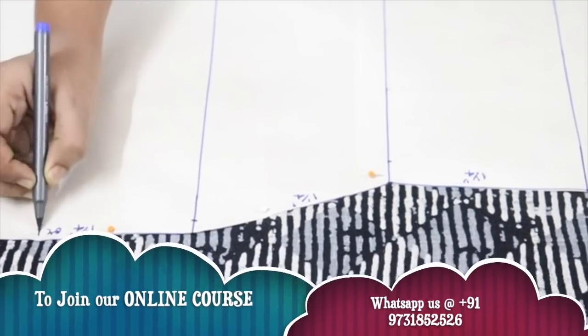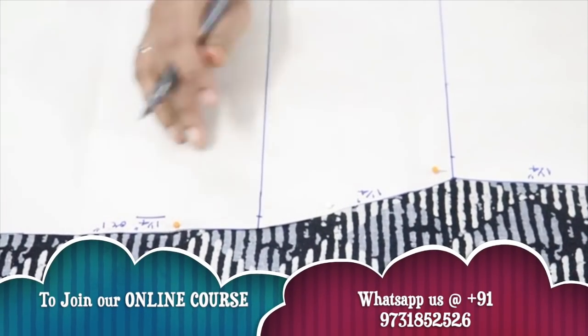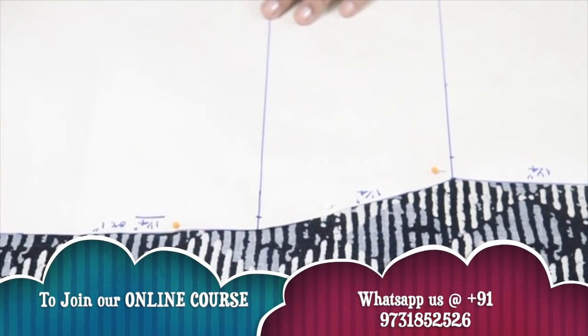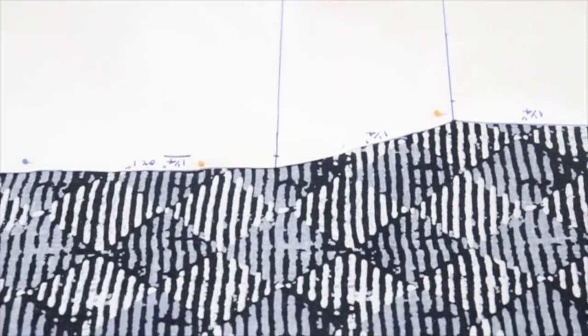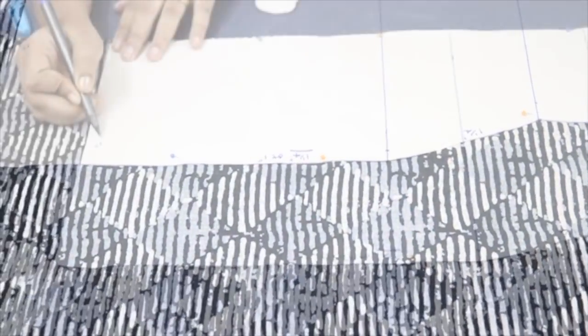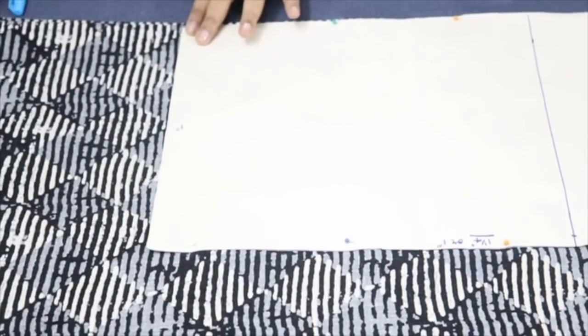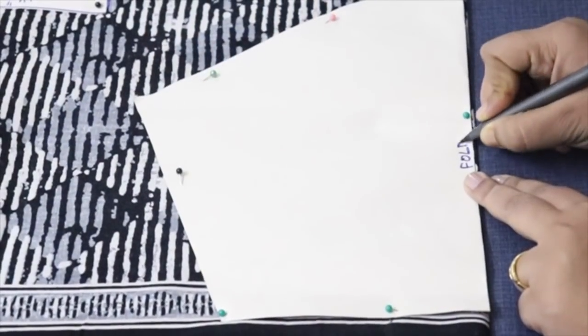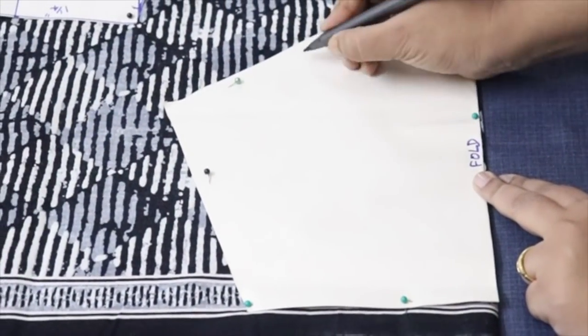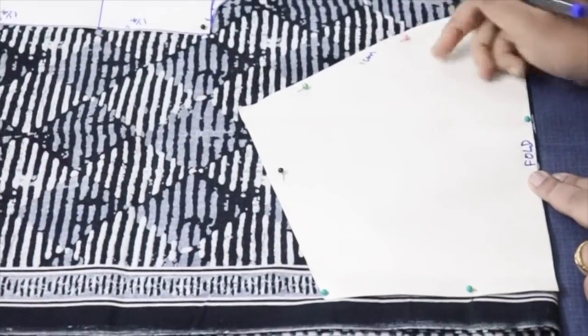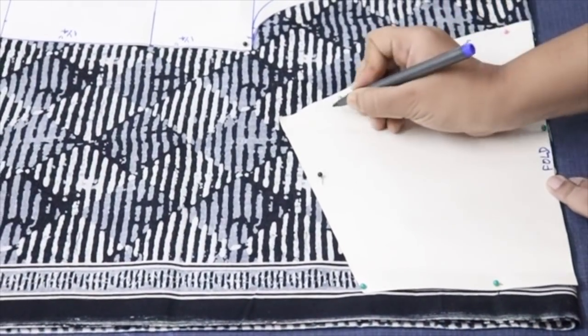So while making the paper pattern we have made with exact measurement. So whatever seam allowance you have to leave it in the fabric. So in the bottom we have to give one inch. So here I need a long kurta. So whatever height I am having in the fabric I am going to keep it as it is.